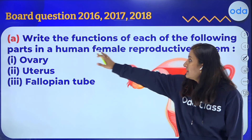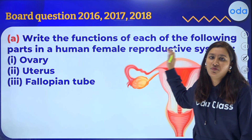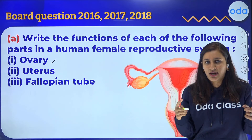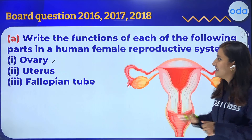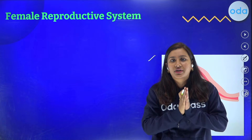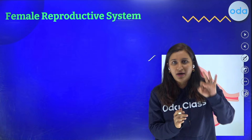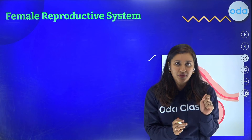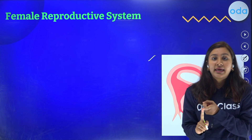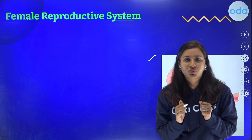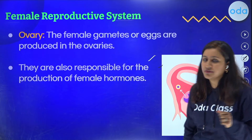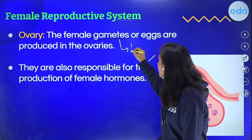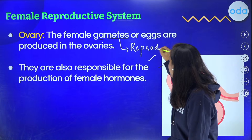The first part of the question is: write the functions of each of the following parts in the human female reproductive system. Let's start with the first one — the ovary. The ovary is the primary sex organ in females. This sub-part is one mark, so you need to be precise. Its primary function is the production of gametes. Gametes are reproductive units.